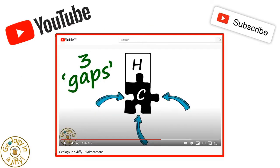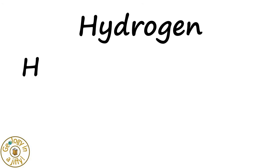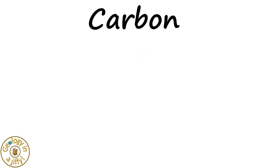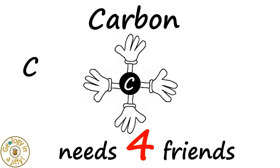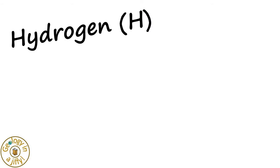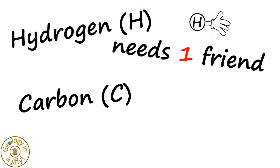To understand the basics of how these bond together, please do watch our Geology in a jiffy video about hydrocarbons. From that video we know that hydrogen needs one friend to make it stable, so we use this handy model. We also know that carbon needs four friends to make it stable, so we use this handy model. From these models we have two key ideas: hydrogen needs one friend and carbon needs four friends.